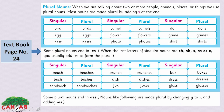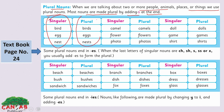Now look at the plural nouns. When we are talking about two or more people, animals, places or things, we use a plural noun. Most nouns are made plural by adding S at the end. Like: bird → birds, egg → eggs, nest → nests, camel → camels, flower → flowers, photo → photos, doll → dolls, game → games, shirt → shirts.